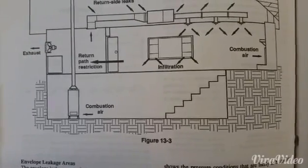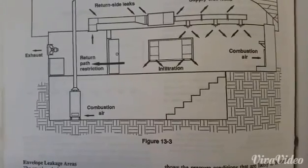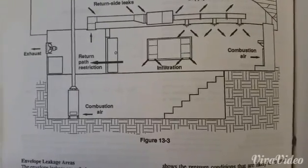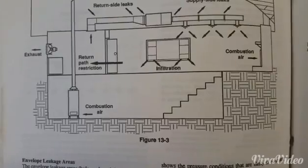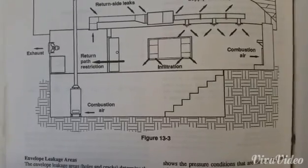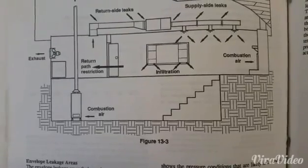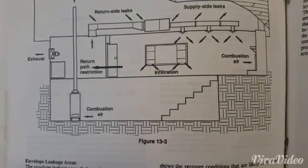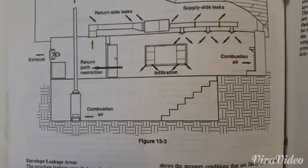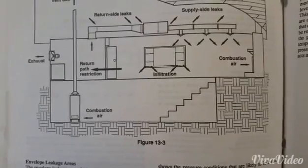But once air is taken from the house, it causes negative pressure and causes air to infiltrate through any cracks or openings it can find. As you see in the picture, you see windows, just any cracks in doorways, anywhere where air can infiltrate the house, it'll cause it to start infiltrating from that area once there's a negative pressure.